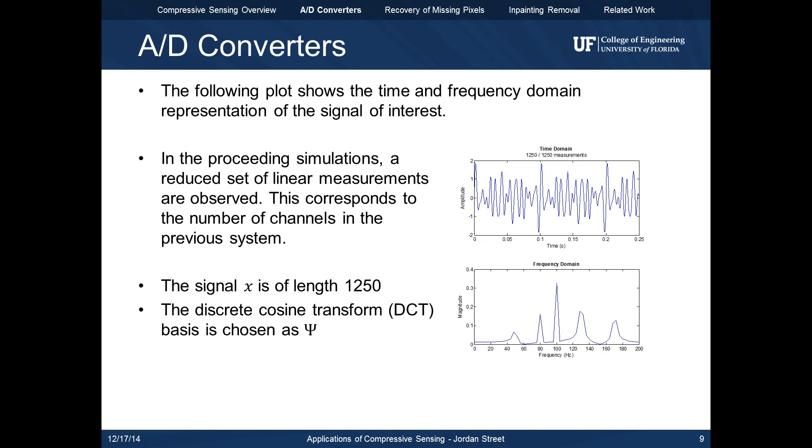To simulate the system, we generate a signal which is a sum of five random sinusoids. Note that the signal has sparsity in the frequency domain. The length of x is 1250, and psi is chosen to be the DCT basis.